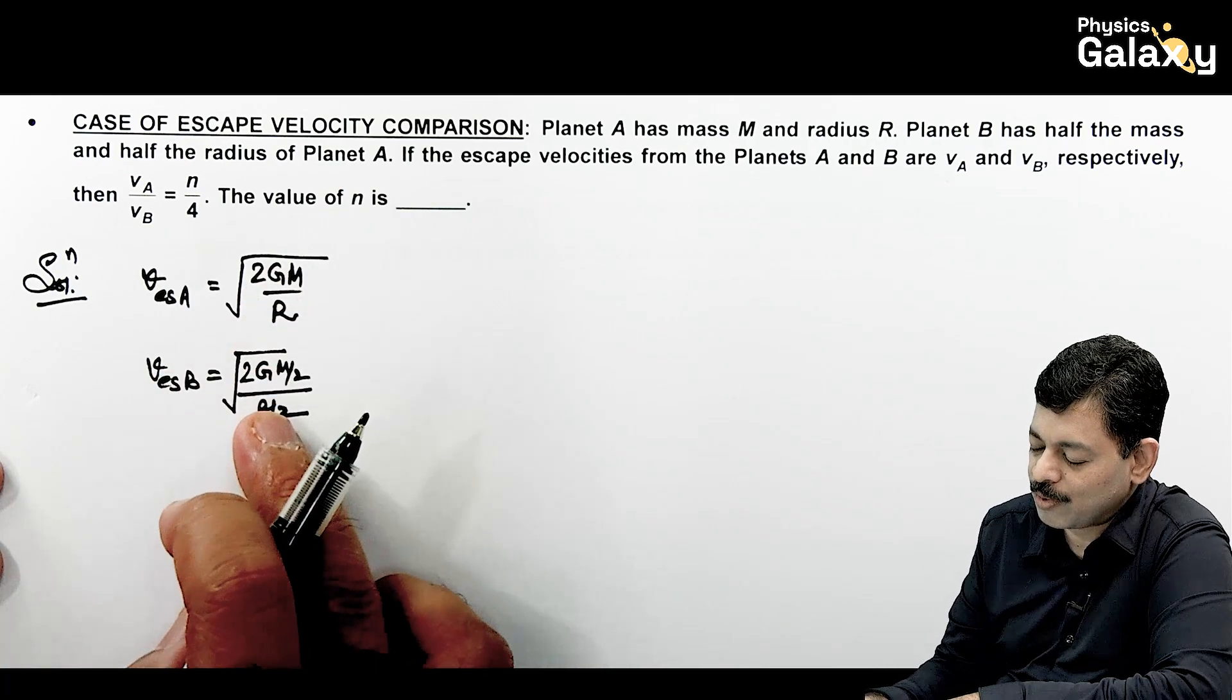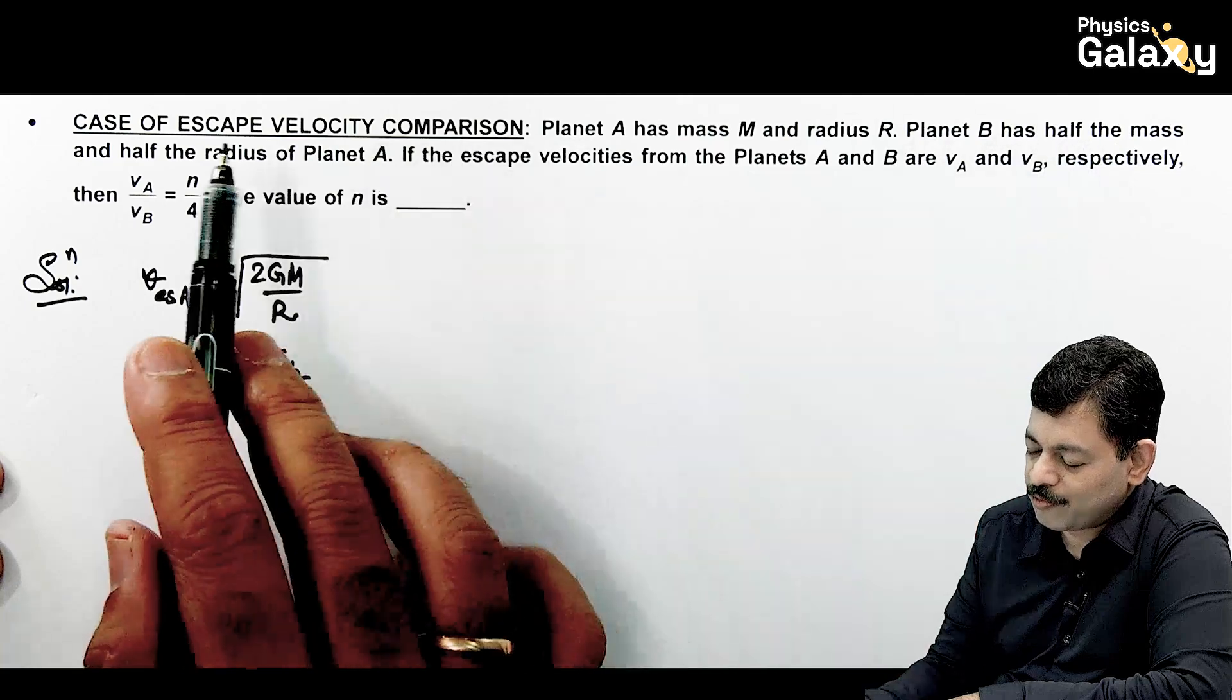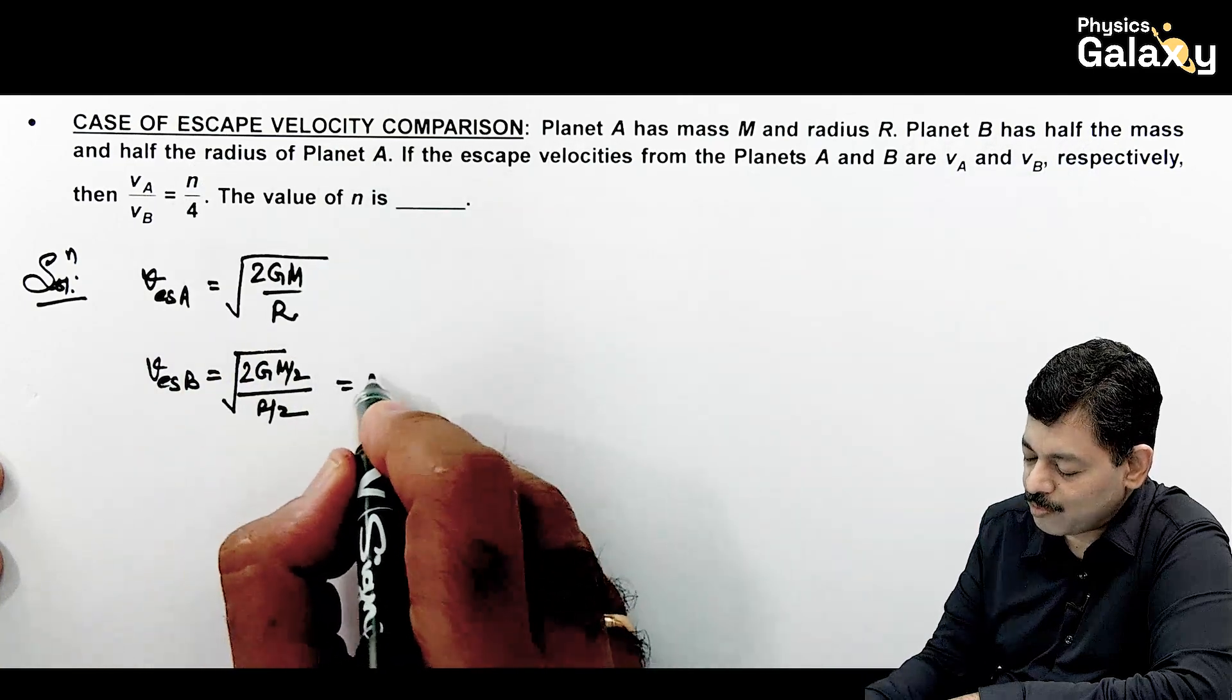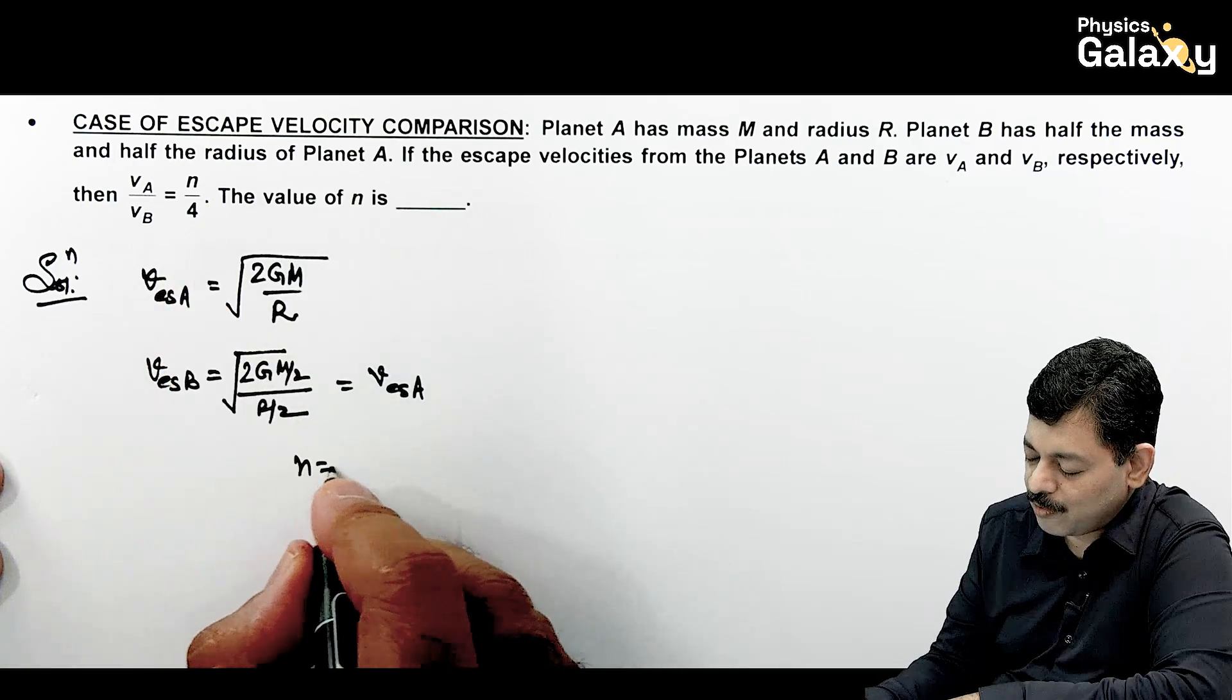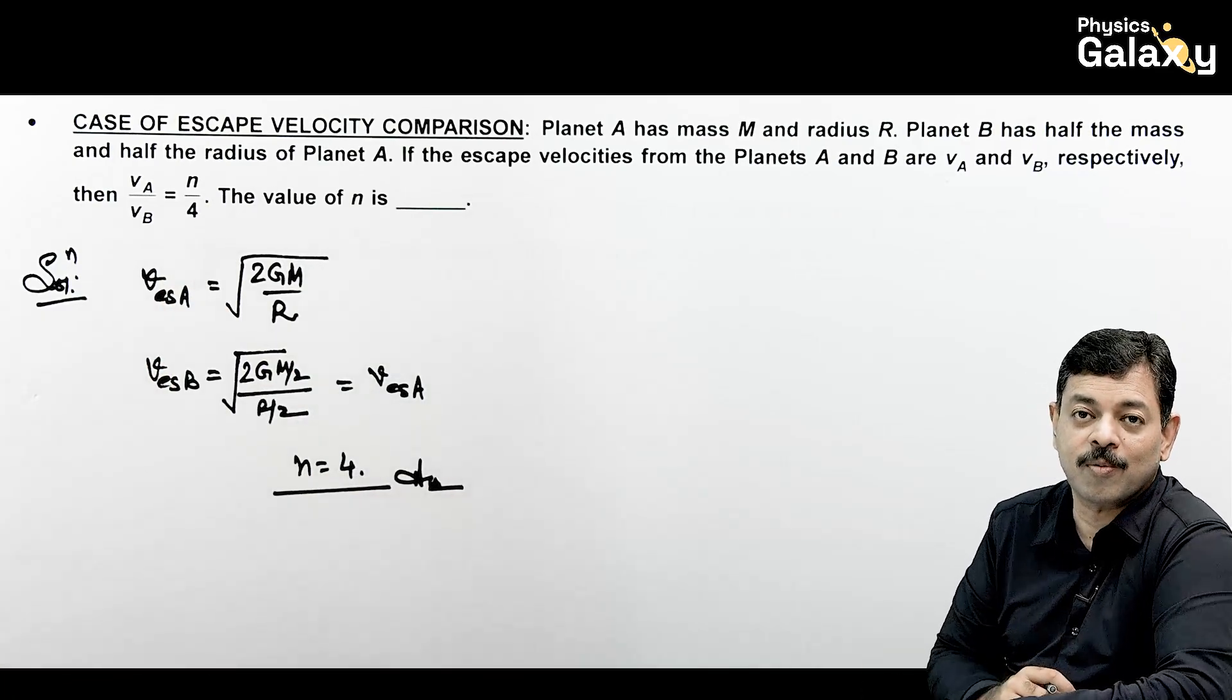You can see both values are coming out to be equal because B's mass is half and radius is also half. This comes out to be escape velocity of A. So va and vb are equal, and the value of n can be written as 4.